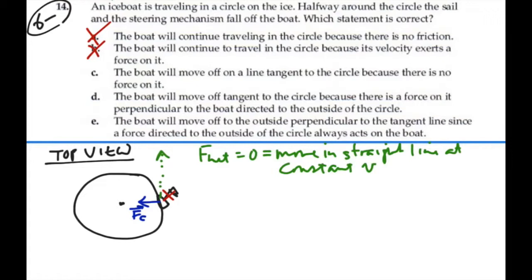C, the boat will move off in a line tangent to the circle because there is no force on it. That is true, at least in the horizontal direction. There is still gravity and normal force in the vertical direction, but we are not worried about that.